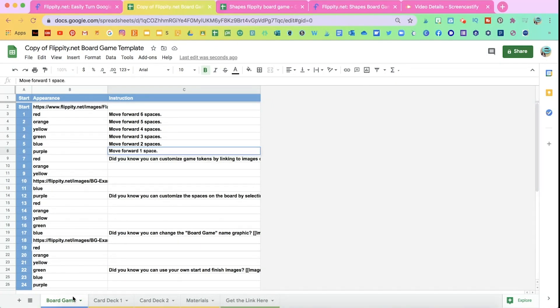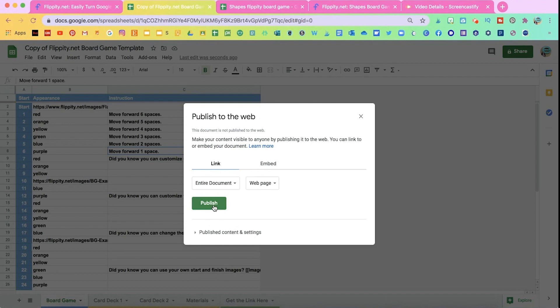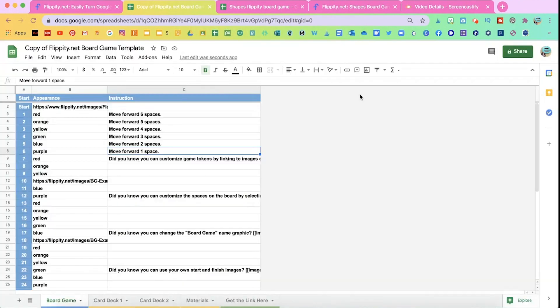Even though I'm not done editing yet, I'm going to publish it to the web. That way I can simultaneously check my progress and see what it looks like as I'm editing. So let's say I'm done. I would click on file and then go all the way down to where it says publish to the web. Click publish. Okay. Close that.